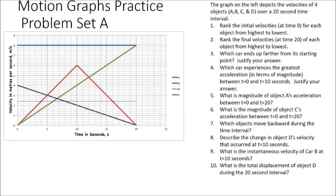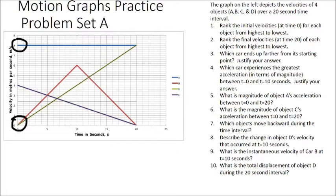We have four objects: A in blue, D in red, B in green, and C in purple. If we want to look at the initial velocities, we're just going to read those values straight off of the y-axis. For example, for object A in blue, this object is starting off with a velocity of about 8 meters per second. For object D in red, this object is starting off with an initial velocity of zero — it's starting off at the origin.